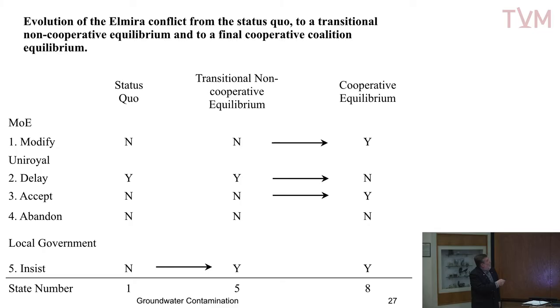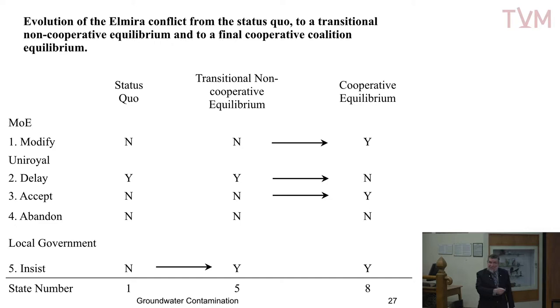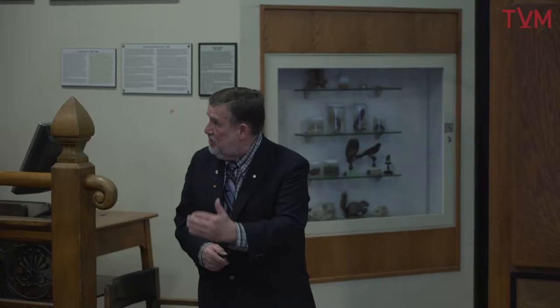So take a look here. On the left-hand side is the model we're putting together. You have a conflict — the key things: who are the decision makers with real power? In this case it was the Ministry of the Environment, Uniroyal the company that did the pollution, and the local government. These are the decision makers with actual decision-making power. There are other stakeholders, but they're not part of the negotiations. The second thing we ask: what are their options available that they could use in this particular dispute?